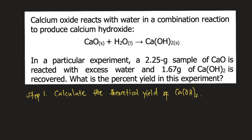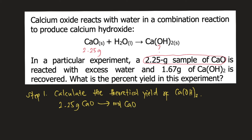In the problem, we are given 2.25 grams of calcium oxide. From this, we will solve how much calcium hydroxide forms. We start with 2.25 grams of calcium oxide, convert this to moles of calcium oxide, then from moles of calcium oxide to moles of calcium hydroxide, and finally from moles of calcium hydroxide to grams of calcium hydroxide.